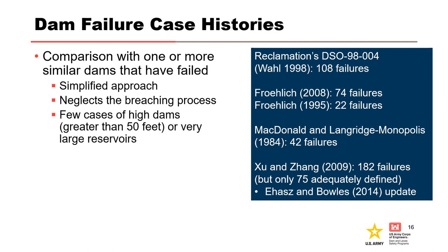In general, the database of well-documented dam failure case studies is small and contains few examples of very high dams or very large storage volumes. Reclamation's DSO-98-004 by Tony Wall, 1998, is one of the most comprehensive databases. Froelich 2008 is another well-known database. Xunjiang 2009 collected 182 failure cases, including some from China that were not previously available. Nearly one-half are for high dams, and details of 75 failure cases had sufficient information for developing breach parameter models. This database is unique in that it attempts to characterize embankment erodibility.